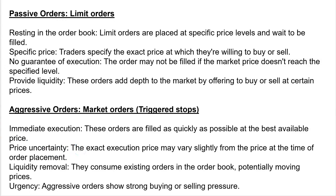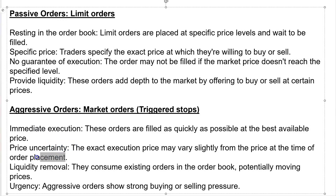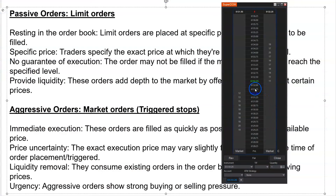There is price uncertainty with aggressive orders. The exact execution price may vary slightly from the price at the time of order placement, or in the case of a stop being triggered. If you've ever used NinjaTrader or any other platform and you enter a market order when the offer is 32.25, you might find yourself filled at 32.75 — because there's a lot of trading going on from the time you click submit to the time the order hits the exchange. That's called slippage — the market moves fast.